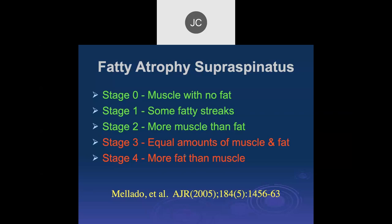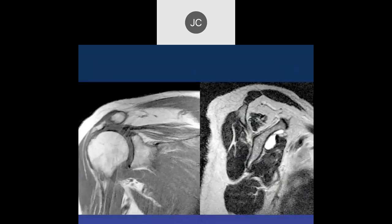I'm less particular about reporting fatty atrophy now. Recent papers show it's not a reliable indicator. Some patients with a lot of fat in the muscle may still achieve good repairs, though tissue quality is a concern. I haven't seen studies comparing long-term efficacy of rotator cuff repair based on the amount of fat in the muscles. Scarring and retraction are far more important than fat content within the muscle.